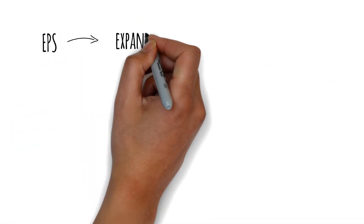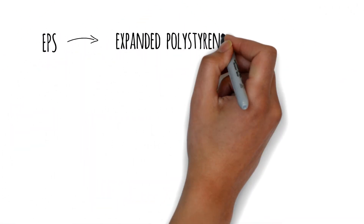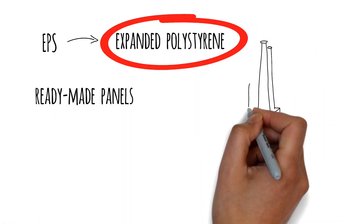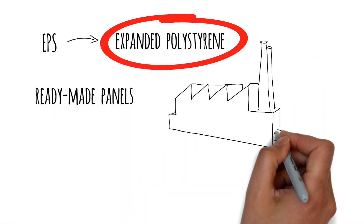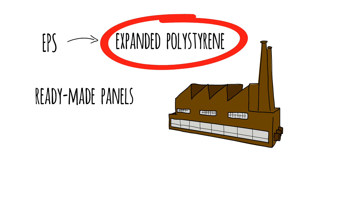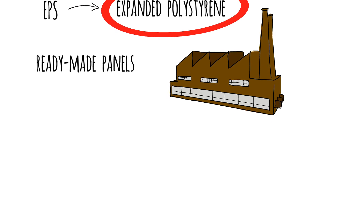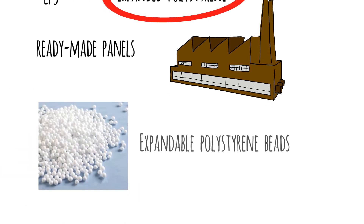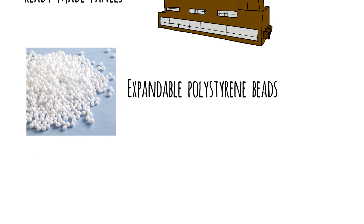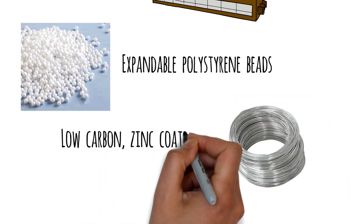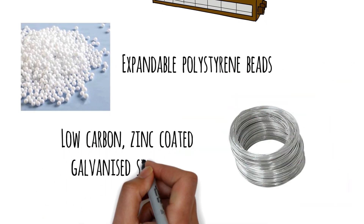EPS stands for expanded polystyrene. EPS panels are ready-made panels made from the factory. To make them, two main raw materials are needed: expandable polystyrene beads and low-carbon zinc-coated galvanized steel wire.